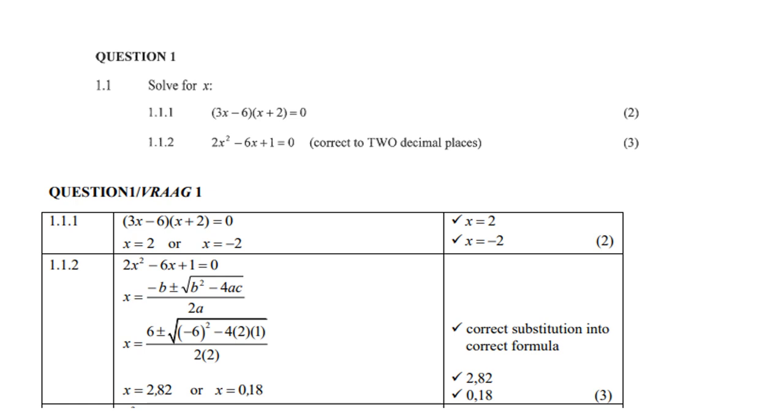1.1, so you must solve for x. So given is the factorized equation (3x - 6)(x + 2). Now what is important here is to notice that there is already a 0 on the right hand side, and that is the ideal situation which you would like to have, is to have a 0 on the right hand side. The same goes for 1.1.2, there's also a 0 on the right hand side.